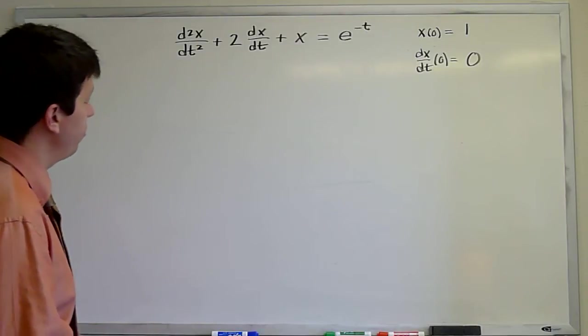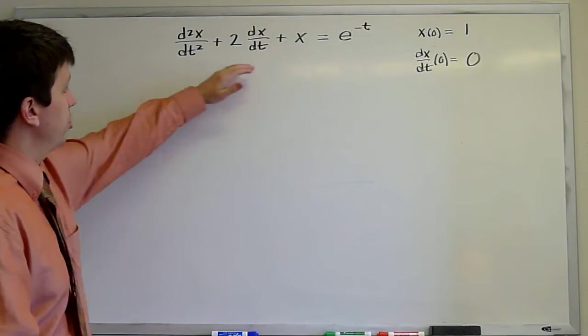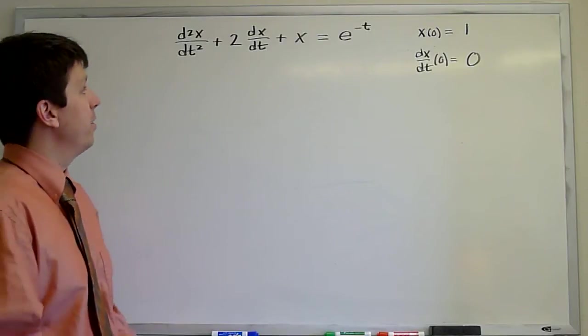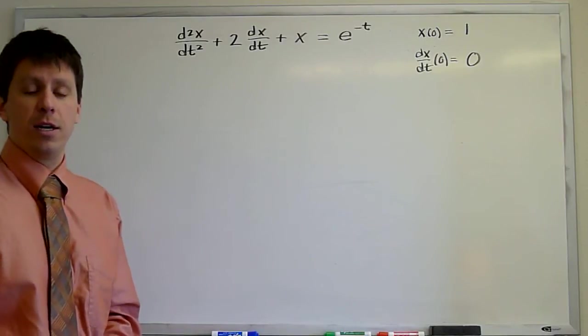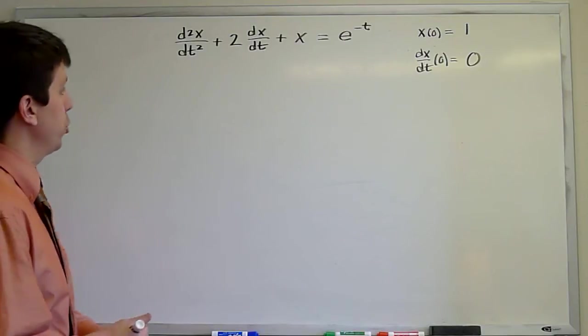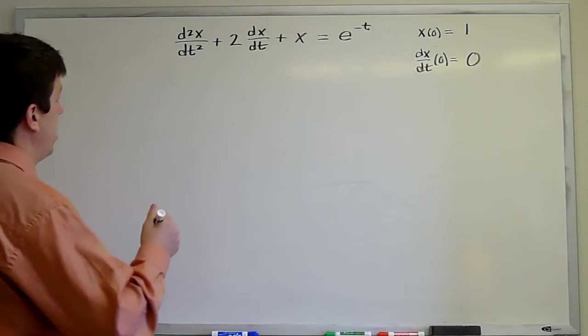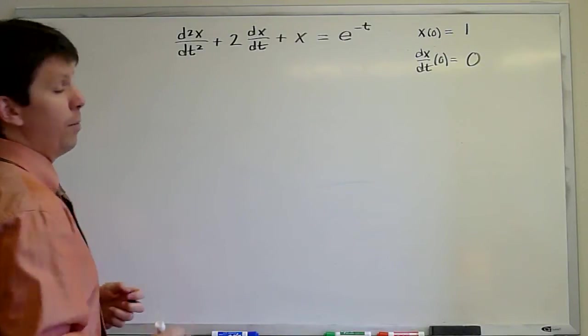The first thing we need to do is verify that it is a constant coefficient problem, which we see it is. It doesn't work for any other kind of problem besides constant coefficients. But having done that, the first thing we need to do is find the homogeneous solutions.